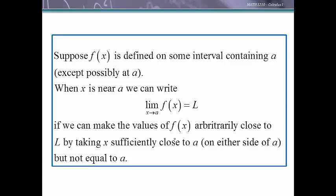So it doesn't need to be defined at a. When x is near a, we write the limit as x approaches a of f(x) equals L. So here is our notation. If we can make the values of f(x) arbitrarily close to L by taking x sufficiently close to a on either side of a, but not equal to a. So this says we say that the limit exists and it equals L if we can get arbitrarily close to L by getting closer and closer and closer to a.